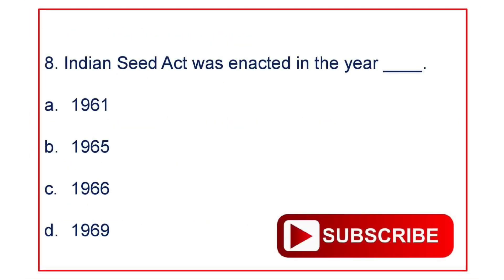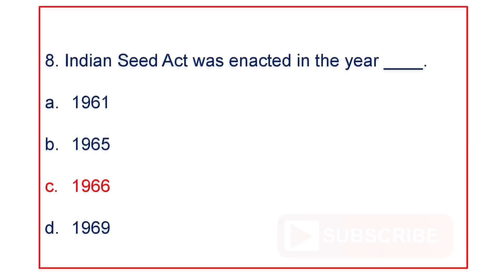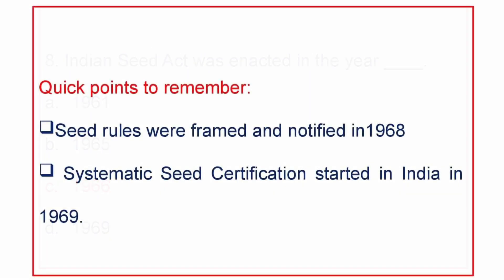Next question: Indian Seed Act was enacted in the year: A. 1961, B. 1965, C. 1966, or D. 1969. The answer is it was enacted in 1966. Some quick points to remember: seed rules were framed and notified in 1968. Systematic seed certification started in India in 1969.